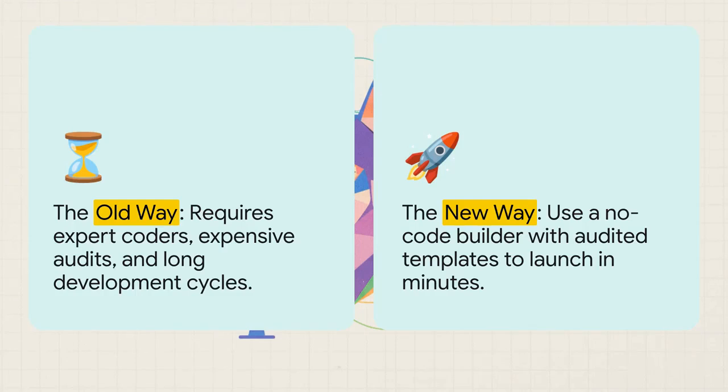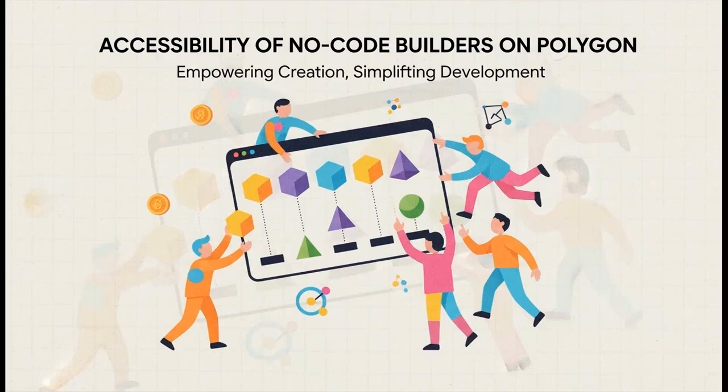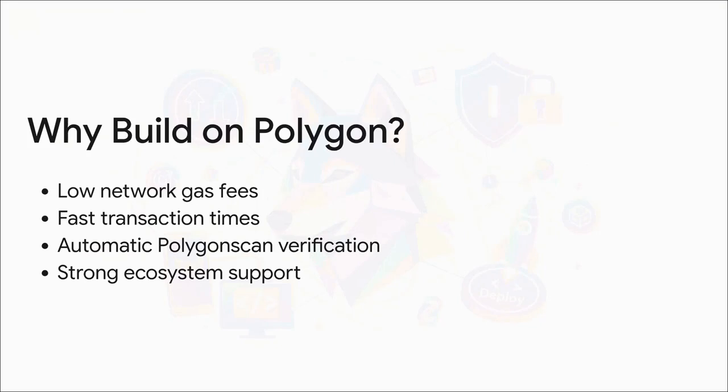But these new no-code tools, they've changed everything. The solution is a no-code builder, especially on an efficient chain like Polygon — it opens this up to everyone. Why Polygon? Simple. It's got low gas fees and super fast transactions. It just makes sense.